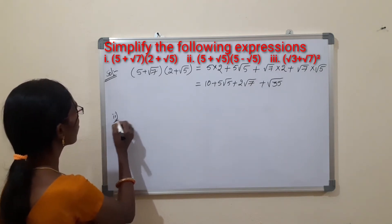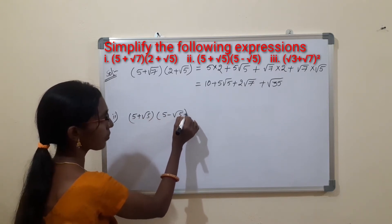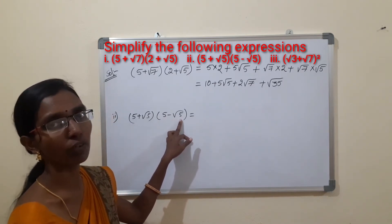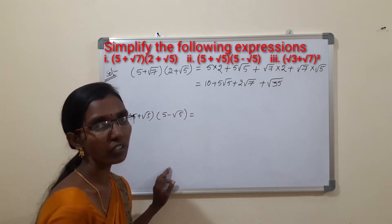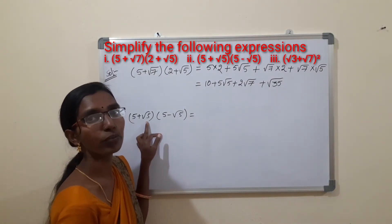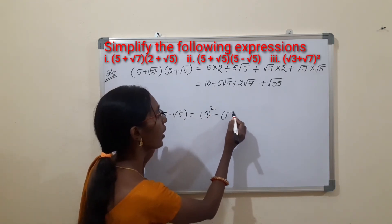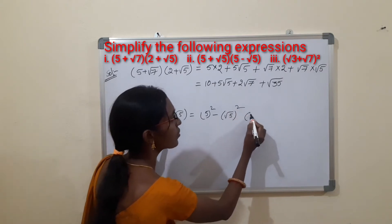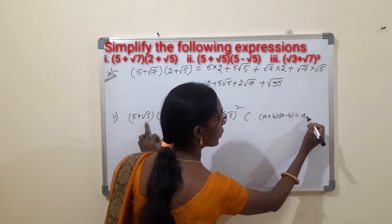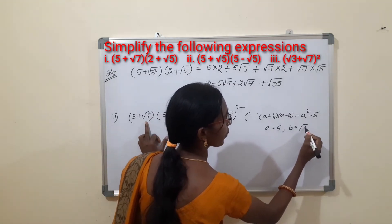The second one is (5 + √5)(5 - √5). This is in the form of (A + B)(A - B), and the formula is (A + B)(A - B) = A² - B². Here A is 5 and B is √5.